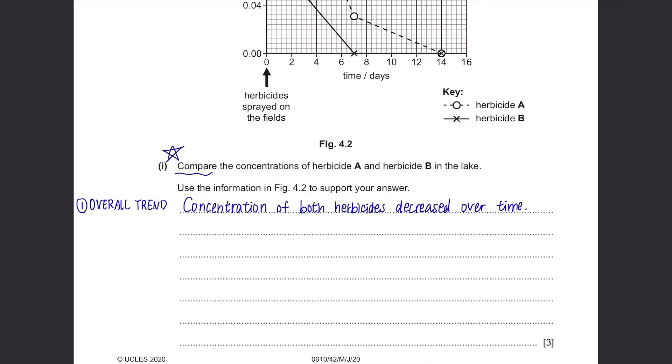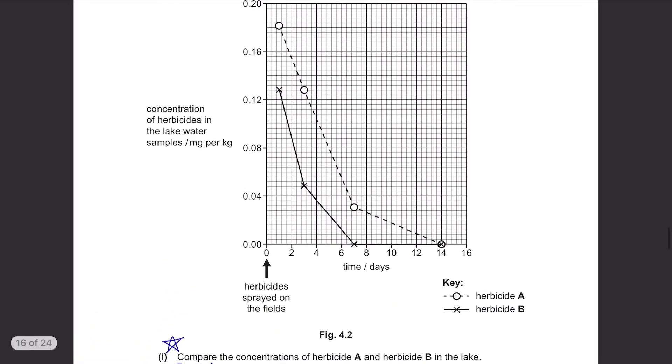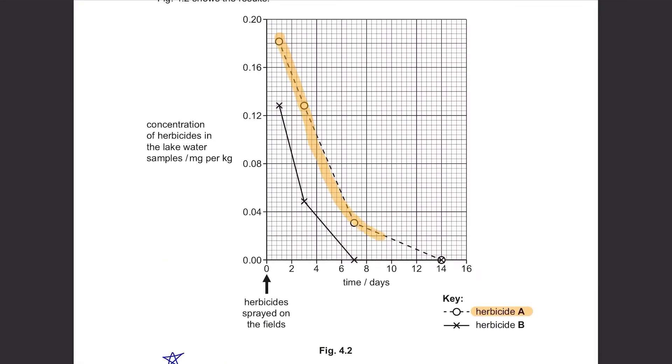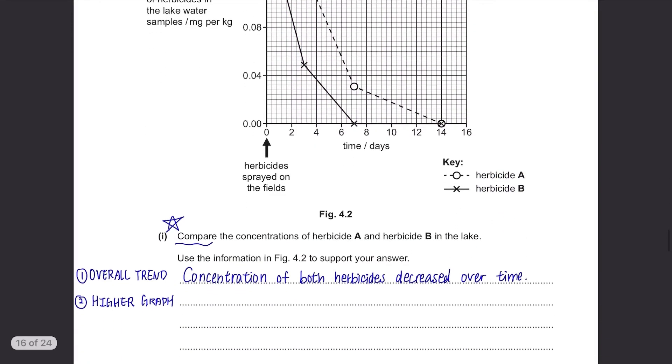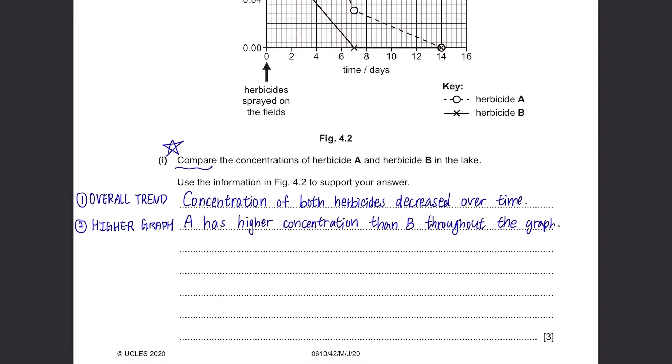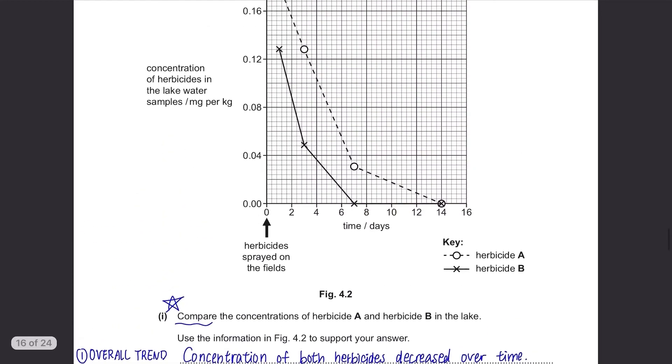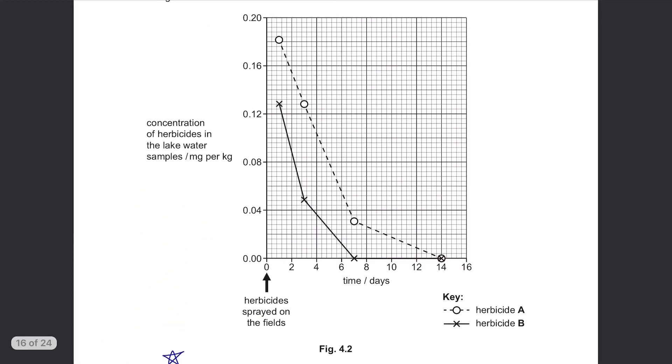Then compare those two by stating which one is higher. Herbicide A has a higher concentration than B throughout the measured readings. Now write some interesting points like when they have reached 0 concentration.